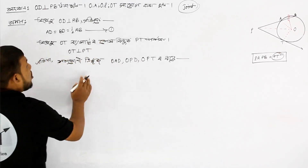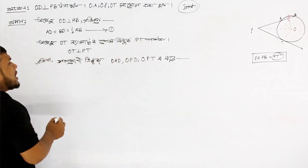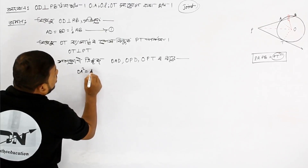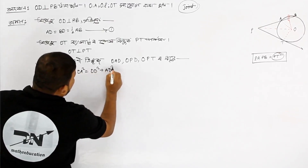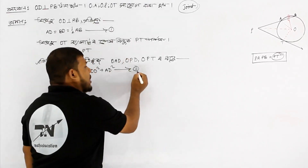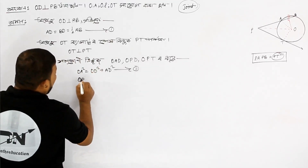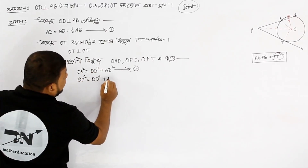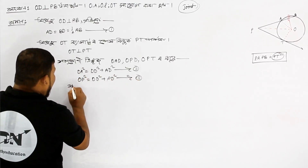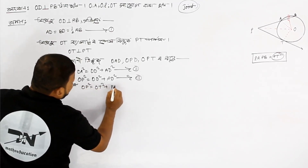O A squared equal to O D squared plus A D squared. Next, I am going to apply triangle O P D to get: O P squared equal to O D squared plus P D squared. Also, O P squared equal to O T squared plus P T squared.